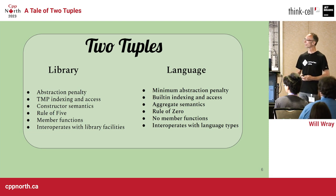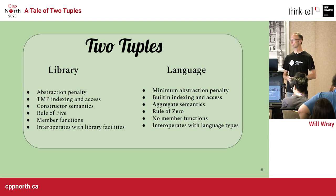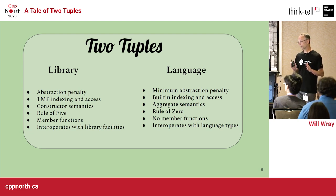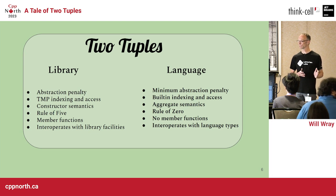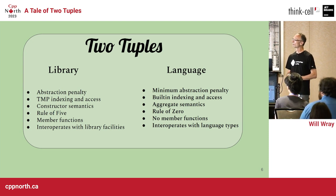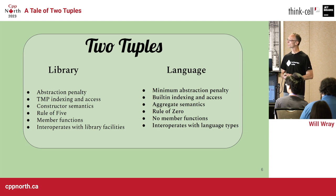What would be the real difference between a library type and a language type? It seems inevitable that any library type is going to add abstraction penalty — a term from Alexander Stepanov. Any additional compilation steps or language rules will have some cost. Compilers have generally improved, so much of the cost can be reduced, but we know there are no zero-cost abstractions. For a tuple type in particular, it seems inevitable that there will be template metaprogramming to access the individual elements.